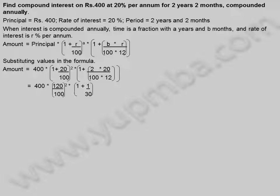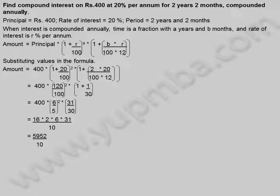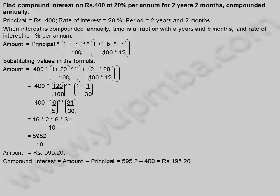= 400 × (120/100)² × (1 + 1/30) = 16 × 2 × 6 × 31 / 10 = 5952/10. Amount = 595.20 rupees. Compound interest = Amount − Principal = 595.2 − 400 = 195.20 rupees.